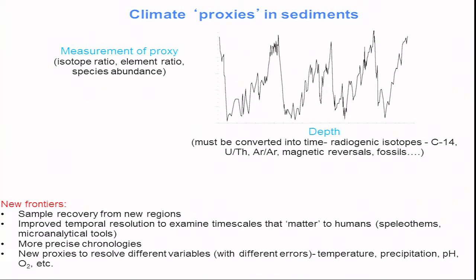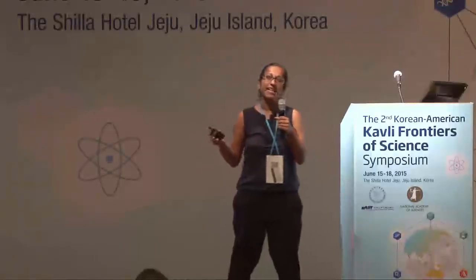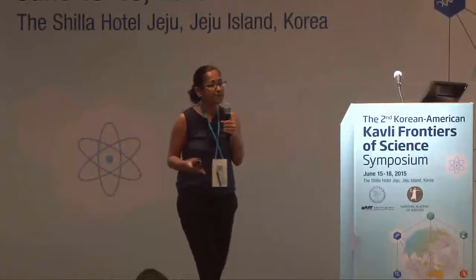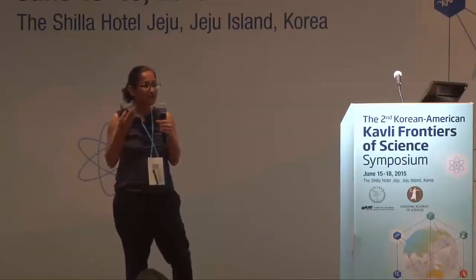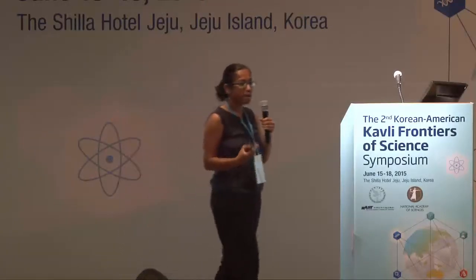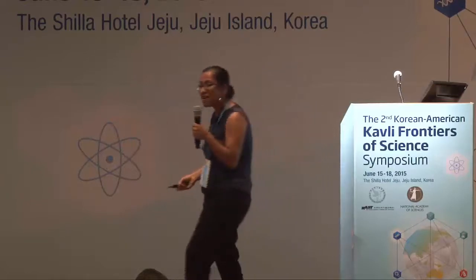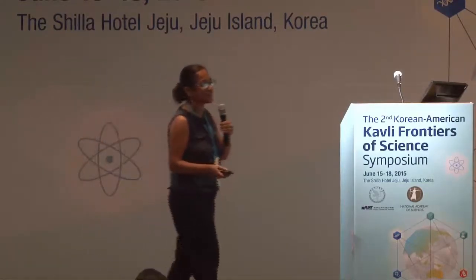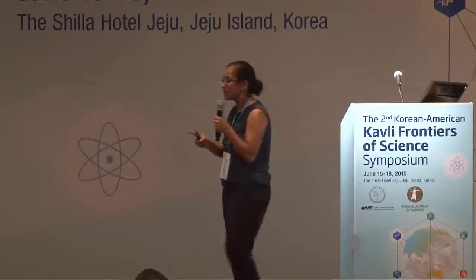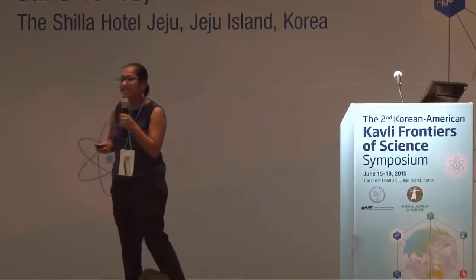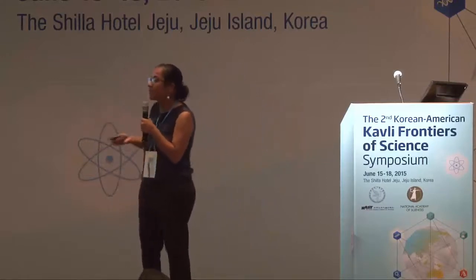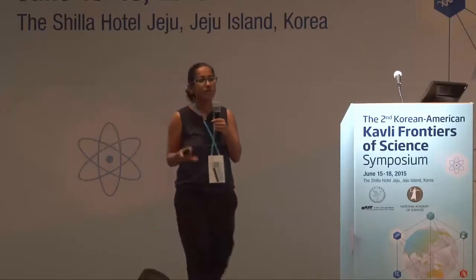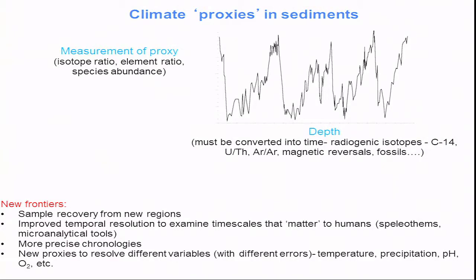Some of the new frontiers include looking at sample recoveries from new regions. It was only about nine years ago that we had the first paleoclimate mission to the Arctic Ocean — I call it the equivalent of a paleoclimate mission to the moon when I'm teaching. Actually, we've been to the moon more than we've actually been to core in the central Arctic Ocean, and we've only been that one time and haven't been able to go back since. What we're going to see in the decades to come are the development of new understanding of critically important regions such as this, just due to the recovery of new samples from these areas.